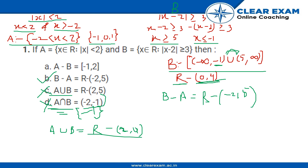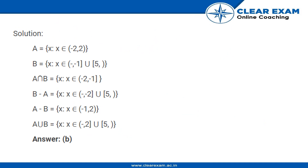Now let's check A minus B. In A there are only minus 1, 0, and 1. So A minus B would require us to remove minus 1 because it is also present in B, so we'll only be left with 0 and 1. So A is wrong. Therefore, B is the only correct answer.